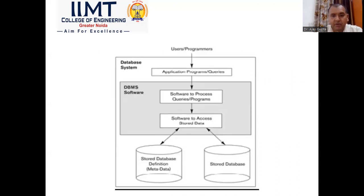In a pictorial representation we have shown a typical structure of DBMS where three components are shown. At the top we can see user or programmer, then application program or query, then DBMS software to process queries, and software to access stored data. At the bottom, two cylinders represent storage devices — one for the stored database and another for stored database definitions, which is metadata. Metadata is data about data.